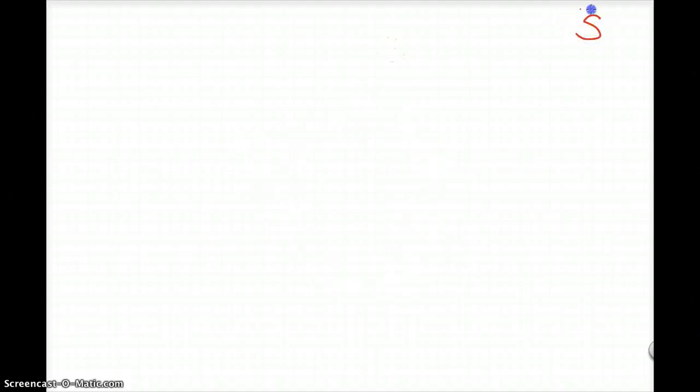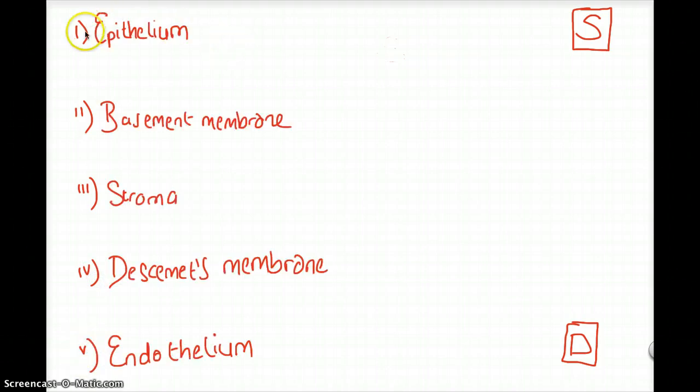Starting from superficial to deep, or inside to outside, the cornea has five layers. These are the five layers of the cornea: starting with the epithelium most superficially, the basement membrane, the stroma, Descemet's membrane, and the endothelium.